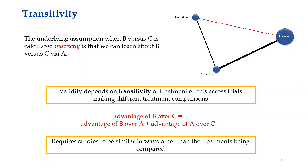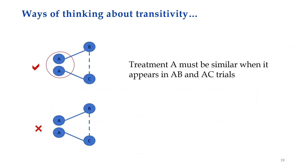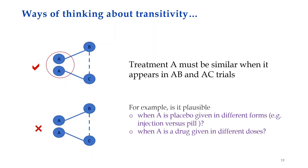In simple words, transitivity requires studies to be similar in ways other than the treatments being compared. One way to consider this is whether the anchor treatment — for example treatment A — is similar when it appears in AB studies and AC studies. For example, consider the case where A is a placebo given as injection in AB studies but as a pill in AC studies, or given in a different dose in each. We need to consider carefully whether it is appropriate to combine these two different versions of treatment A.